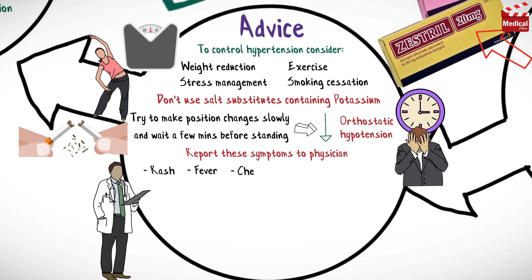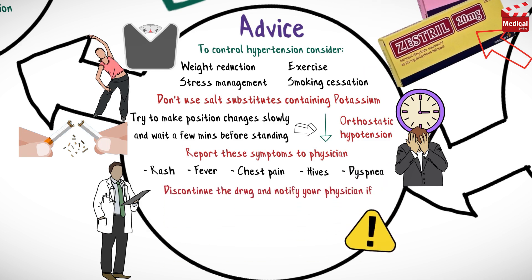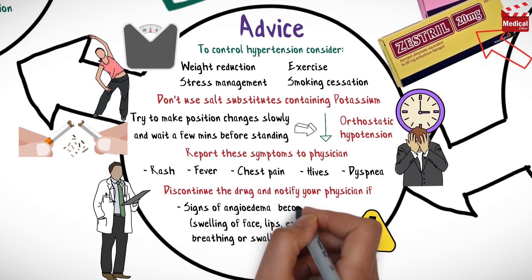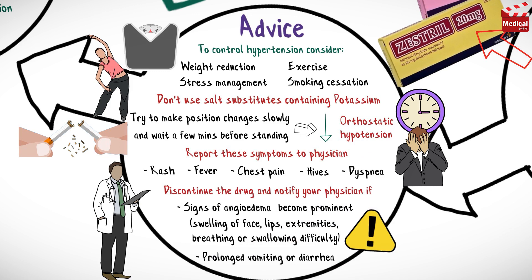Report these symptoms to your physician: rash, fever, chest pain, hives, or dyspnea. If chronic cough develops, discontinue the drug and notify your physician immediately. If signs of angioedema — swelling of face, lips, or extremities, or breathing or swallowing difficulty — become prominent, seek immediate attention.